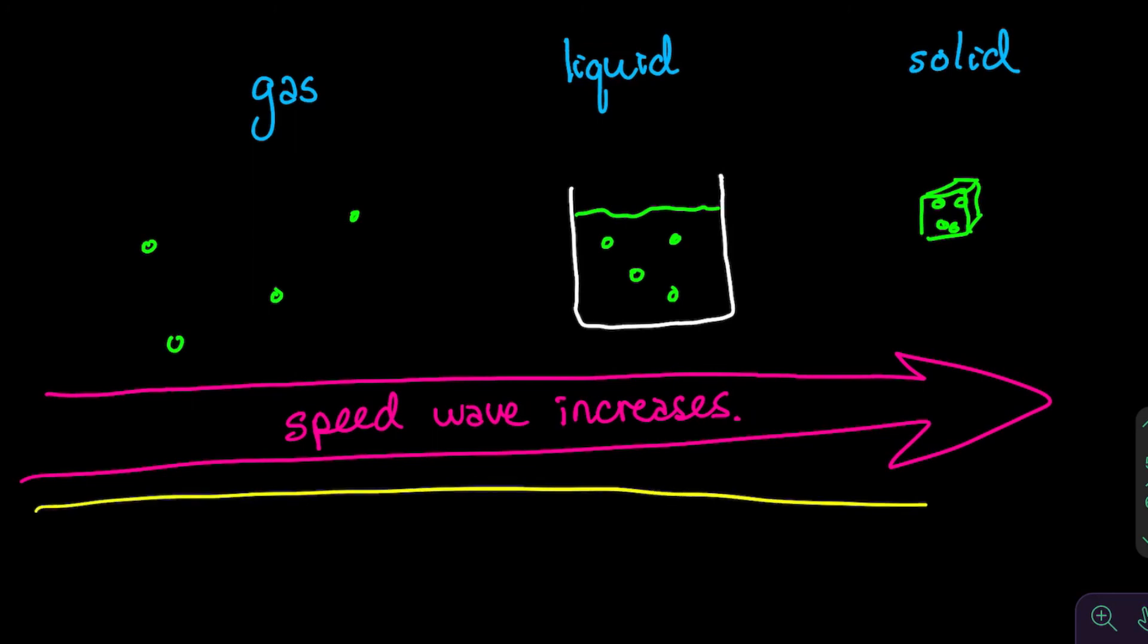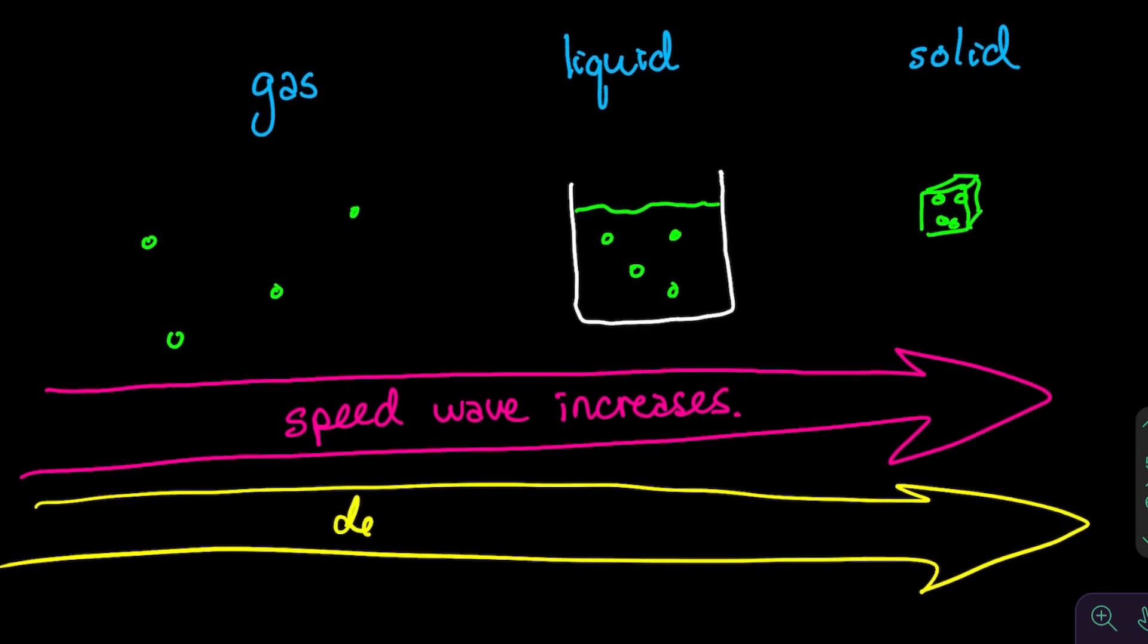We can recall this from our previous discussion of density. As the density increases, so the number of particles in a given area increases, then the speed of the wave also increases.